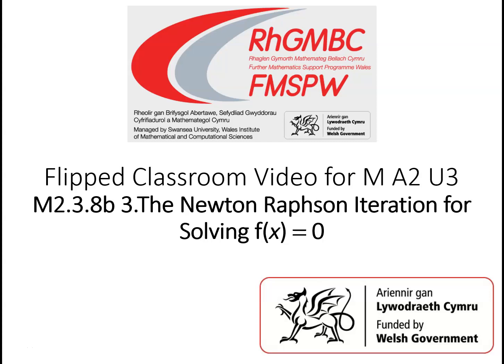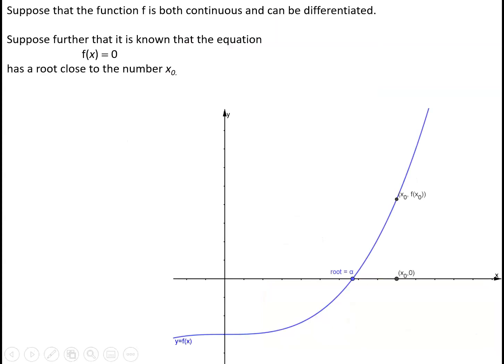In this video we're going to establish an iteration which will work for a large number of equations of the form f(x) = 0. Suppose that we've got a function f that is both continuous and can also be differentiated. Suppose further that it's known that the equation f(x) = 0 has got a root close to the number x0, and we're calling this root alpha in the diagram.